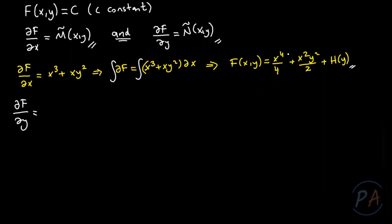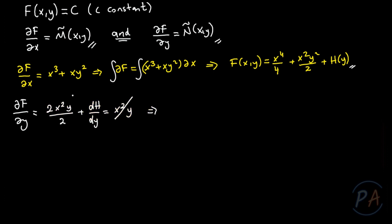Taking the partial derivative of f with respect to y: the derivative of x⁴/4 with respect to y is 0, and the derivative of x²y²/2 gives 2·x²y/2 = x²y, plus dh/dy. Setting this equal to Ñ = x²y, we get dh/dy = 0, so h(y) = c₁, where c₁ is a constant.